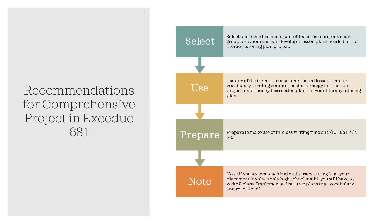Some recommendations I have are that you first select a single student, a pair of students, or a small group of students for whom you will plan all of your lessons for the tutoring lesson plan project. It's helpful if you pick students who have literacy-related IEP goals. For those of you teaching in middle school science, secondary math, or some setting where you aren't directly implementing literacy instruction, you'll still plan all five lessons, but you'll be expected to teach at least one or two of them.